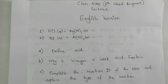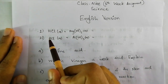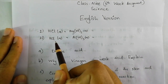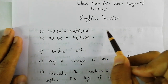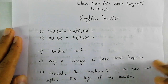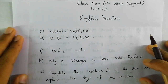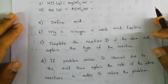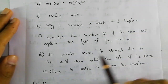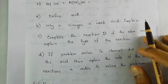Here we have the question of the sixth week science assignment for class 9 commerce group, completely made for English version students. The question gives two chemical reactions with blanks for HCl (hydrochloric acid) and magnesium hydroxide and aluminum hydroxide. We are then given several sub-questions to answer.